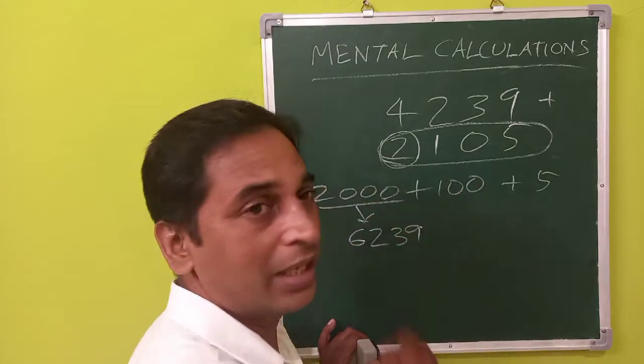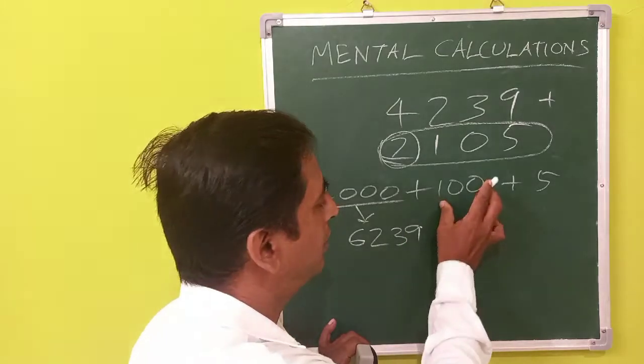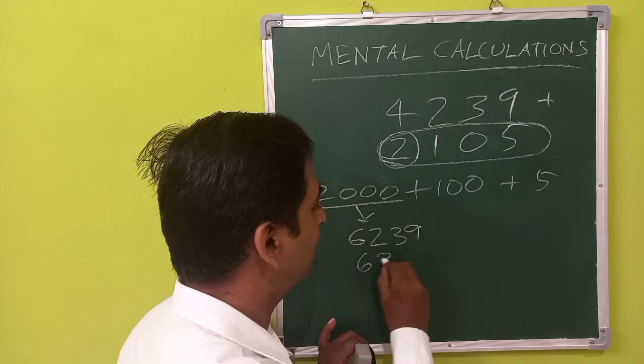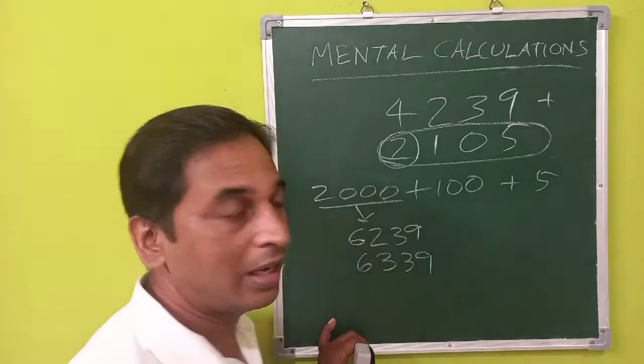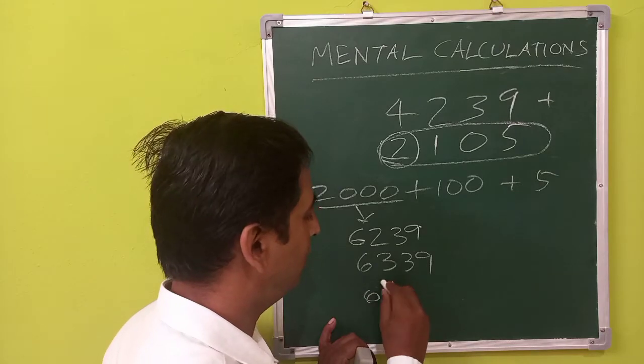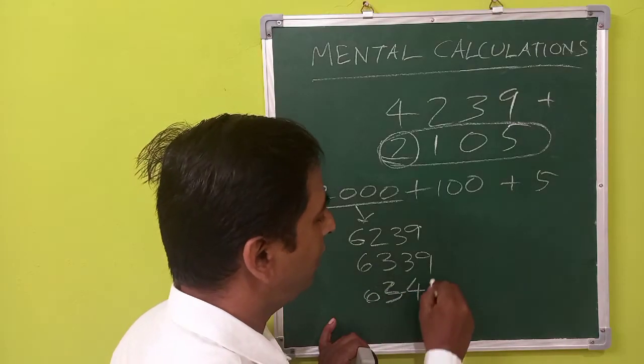Then you can add the next number, that is just 100, then that is easily found, that will become 6339, and then you add 5, that will become 6344.